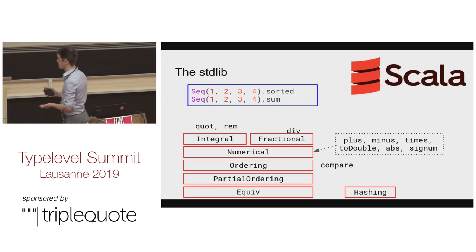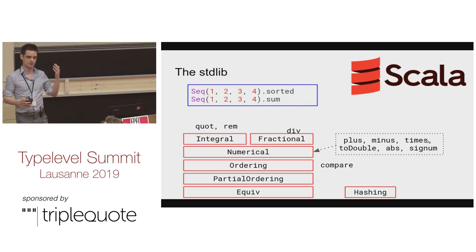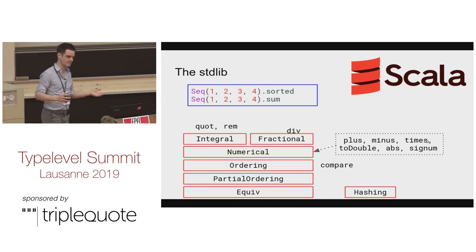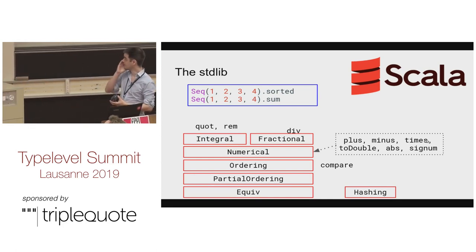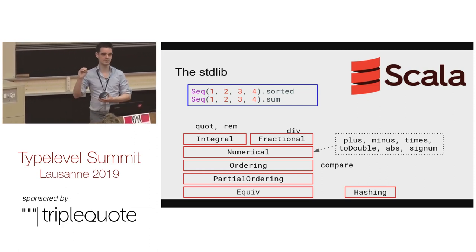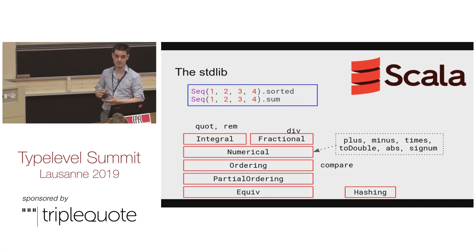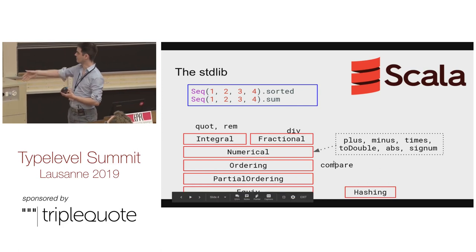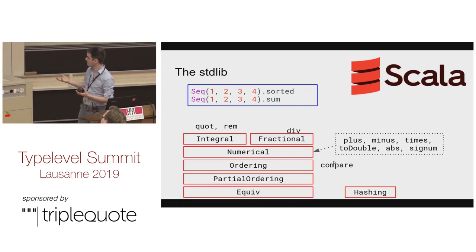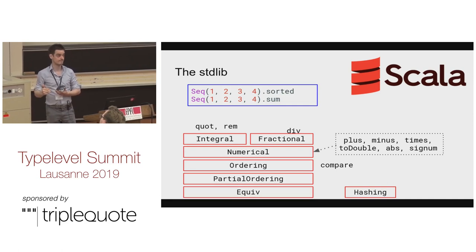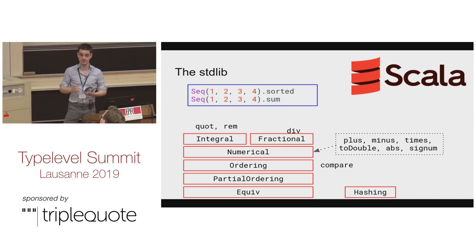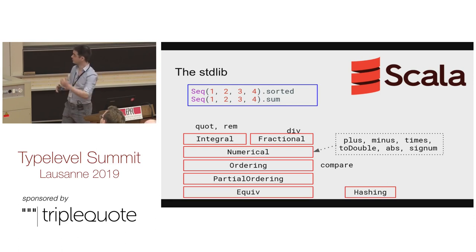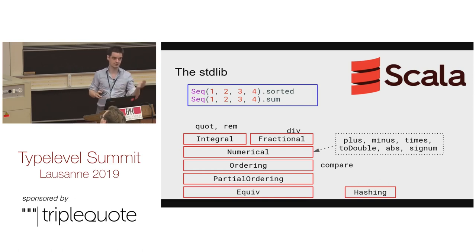We already have some type classes in the standard library, so why Spire? Why not just use the collection library where we only have flatMap and map? The standard library gives you just enough to do things like sequence.sum and sequence.sorted, and nothing more. The inheritance relations in the standard library are weird because everything numerical can be compared. But complex numbers and polynomials — you can add and multiply them, but they are not ordered on a real line. So you won't be able to use those type classes for more general applications than just the standard numerical types.